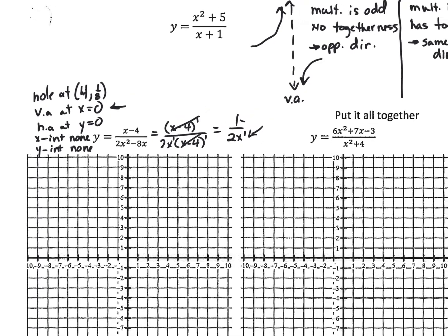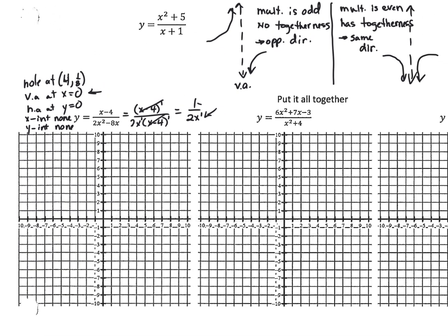So that's the last piece of the puzzle. We're going to put all these pieces on. We have a hole at (4, 1/8), a vertical asymptote at x equals 0, and a horizontal asymptote at y equals 0. Because I have this, the function is going to act towards the horizontal asymptote at the end, travel through the hole point, and continue up towards the vertical asymptote. Since multiplicity is odd — no togetherness — on the other side it goes down, ending up like this.